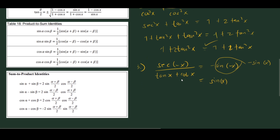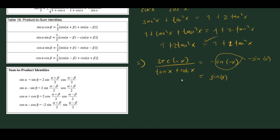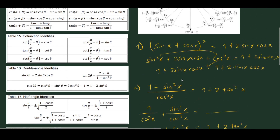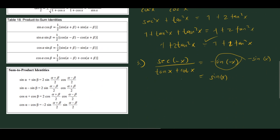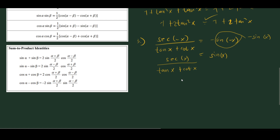Now let's simplify the left-hand side. Using the odd/even identities, sec(-x) = sec x because secant is an even function. So we can rewrite the expression as sec x divided by (tan x + cot x), removing the negative. Now we express secant, tangent, and cotangent in terms of sine and cosine.